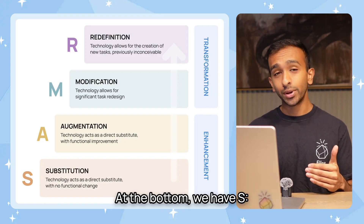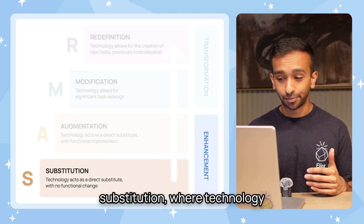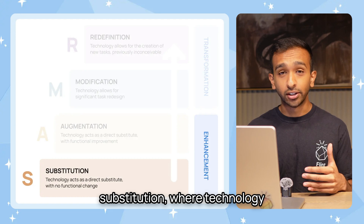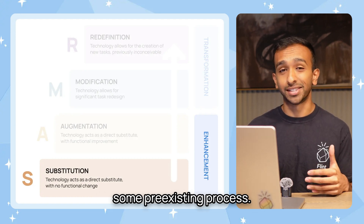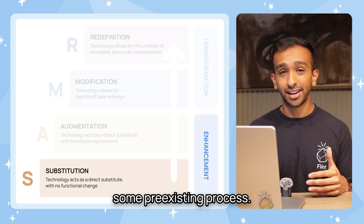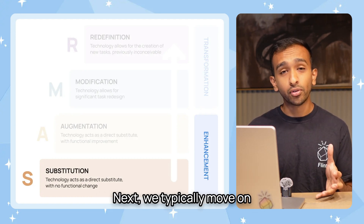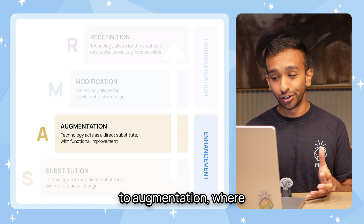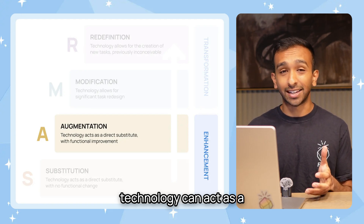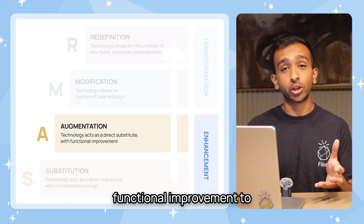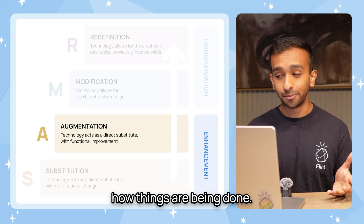At the bottom, we have S — substitution — where technology acts as a direct substitute for some pre-existing process. Next, we move on to augmentation, where technology can act as a direct substitute, but with a functional improvement to how things are being done.